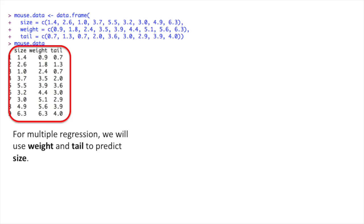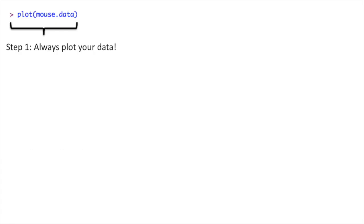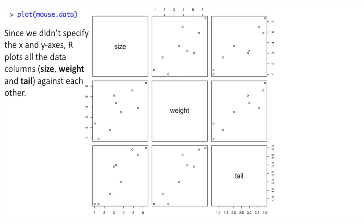Now let's do some multiple regression. For multiple regression, we will use weight and tail to predict size. Step 1. Always plot your data. Since we didn't specify the X and Y axes, R plots all the data columns, size, weight, and tail, against each other.